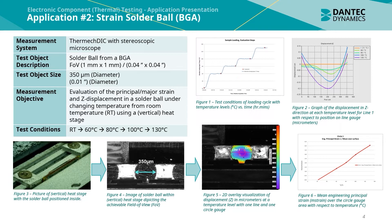Figure 1 shows the test conditions of the loading cycle with temperature levels versus time. Figure 2 is a graph of the displacement in the Z direction at each temperature level for line 1 with respect to the position on the line gauge in micrometres. Figure 3 shows the vertical heat stage used with the solder ball positioned inside. Figure 4 is an image of the solder ball within the vertical heat stage as seen from the cameras within the stereoscopic microscope, depicting the achievable field of view of approximately 1 by 1 millimetre. Figure 5 shows a 2D overlay visualization of displacement Z in micrometres with one line gauge and one circle gauge.